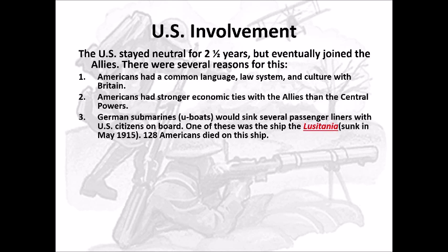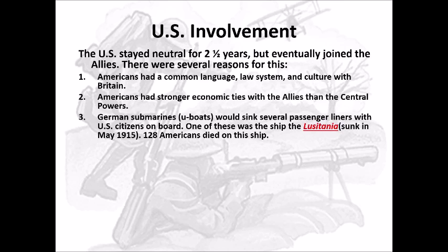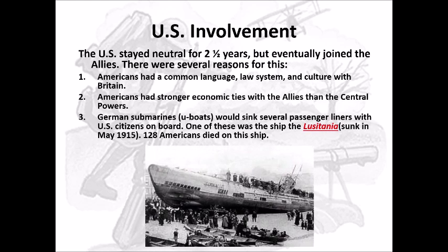Third, German submarines — U-boats — would sink several passenger liners with U.S. citizens on board. One of these was the Lusitania, sunk in May 1915, with 128 Americans dying on board. Don't confuse this with the Maine, which was a battleship that started the Spanish-American War. The Lusitania was a passenger cruise ship traveling from New York to Europe. Even though warnings went out that U-boats were sinking ships, Americans felt they were safe because they weren't involved in the war. When you sink a passenger liner and kill Americans, that upsets Americans quite a bit.